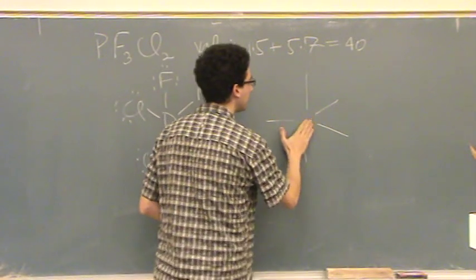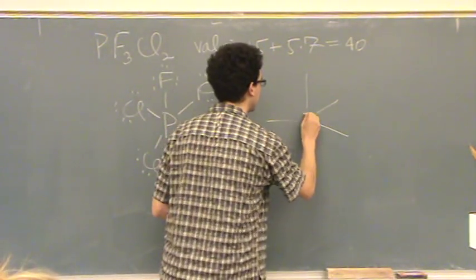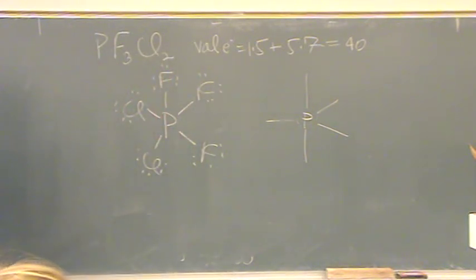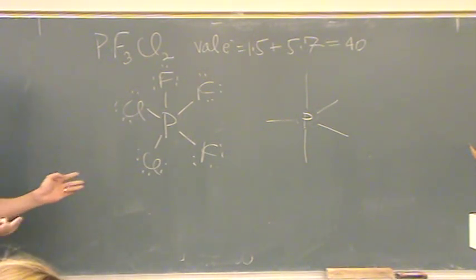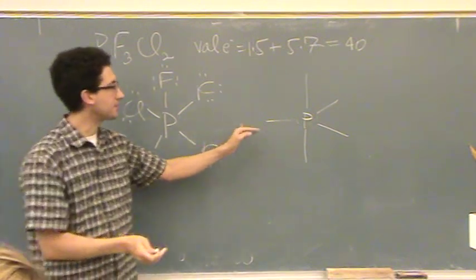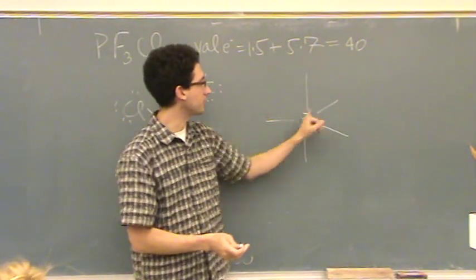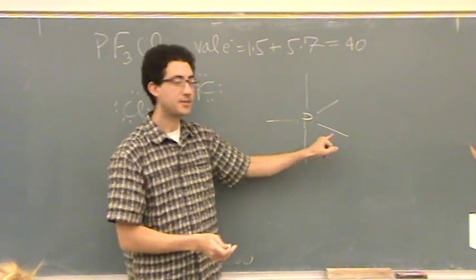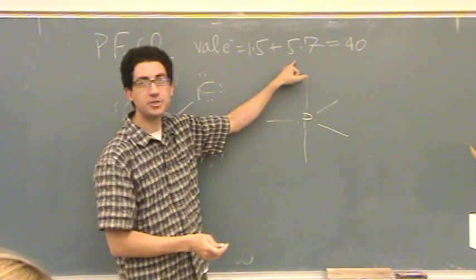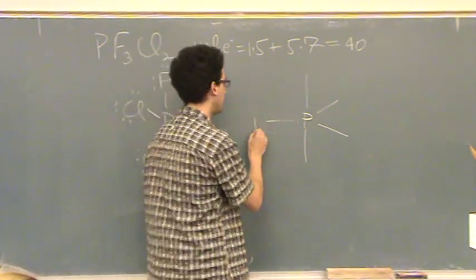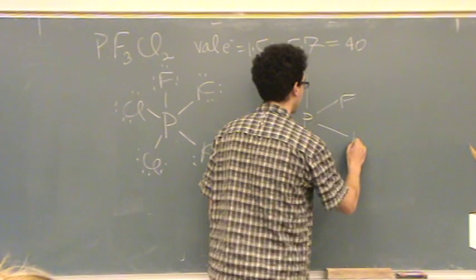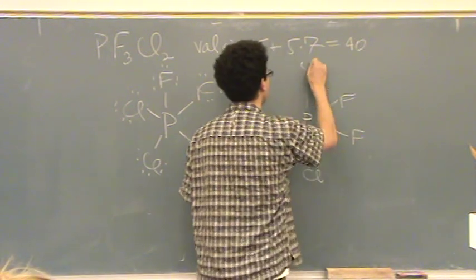Okay, so in the middle goes the phosphorus. And I think they say in the problem this is nonpolar. Is that right? Okay. To make this nonpolar, I need to make it symmetric looking. Why don't, since there's three fluorines, let's put them in the positions that goes with the three, and there's two chlorines, we'll put it in the position that goes with two that are the same.